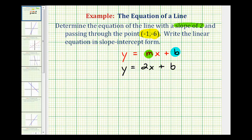However, this point is on the line, which means the values of these coordinates must satisfy the equation or make the equation true. So if we substitute negative one for x and negative six for y, this would leave us with one unknown, and then we could solve for b. So let's go ahead and perform the substitution and solve for b.